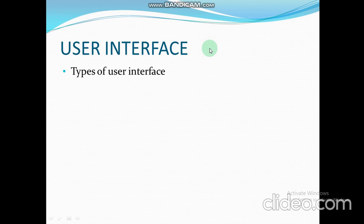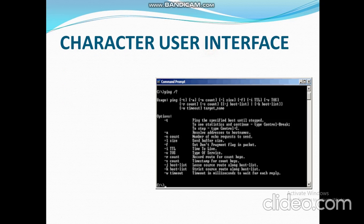There are two types of user interfaces. Various types of user interfaces have evolved over time with advances in technology, but we will discuss only two: CUI (Character User Interface) and GUI (Graphical User Interface). Character User Interface requires the user to type commands in order to interact with the computer system. This type of interface is not a good choice for beginners as they have to memorize a wide range of different commands.